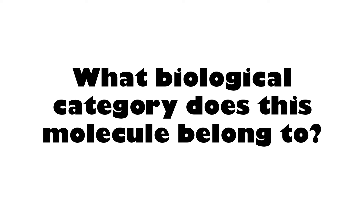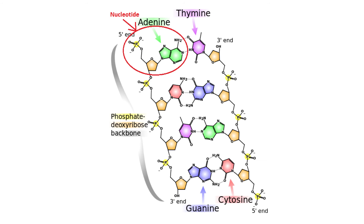What biological category does this molecule belong to? Look at the repeating subunits — you see yellow, orange, green; yellow, orange, red; yellow, orange, purple. Each of those groups are nucleotides. The nucleotides are repeating subunits over and over, and repeating nucleotides make up a nucleic acid.